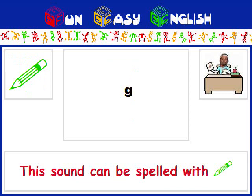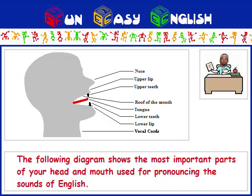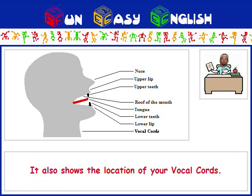This sound can be spelled with G. The following diagram shows the most important parts of your head and mouth used for pronouncing the sounds of English. It also shows the location of your vocal cords.